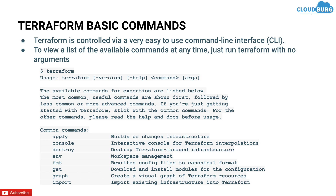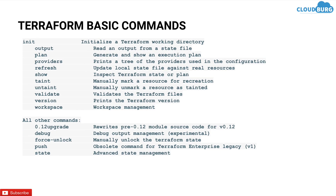Next is import — using terraform import with a resource name and ID, you can import existing infrastructure into Terraform that was created manually. All you need to do is write Terraform code for that particular resource and run terraform import; Terraform will fetch the resource from the cloud provider like AWS and save it in Terraform state. Next is terraform plan — always run terraform plan before terraform apply to see what is going to happen. Next is show — using terraform show you can list down the Terraform state or plan.